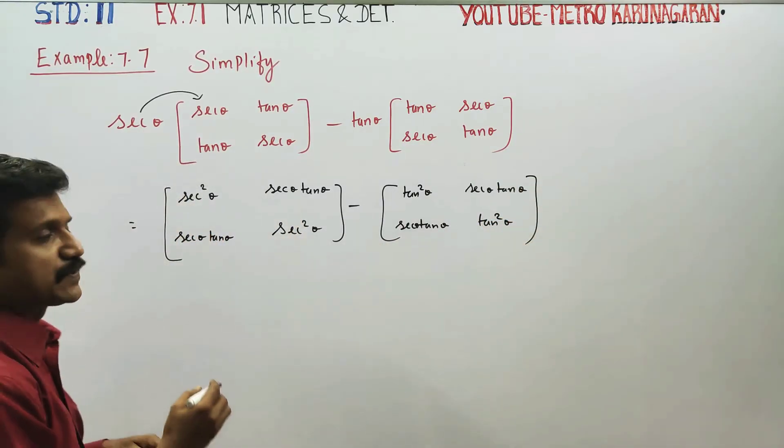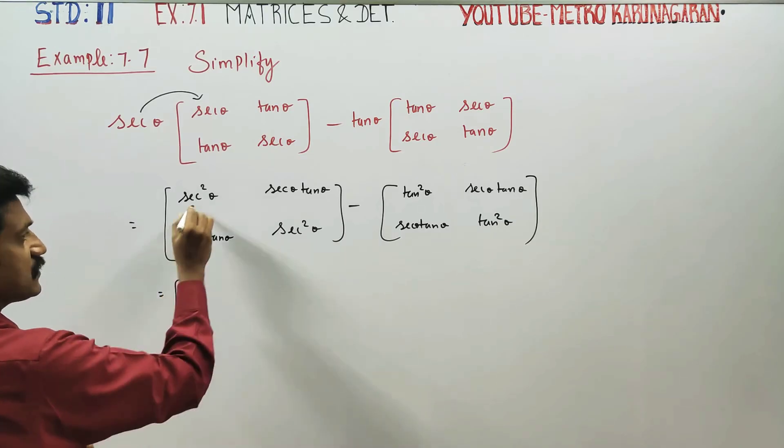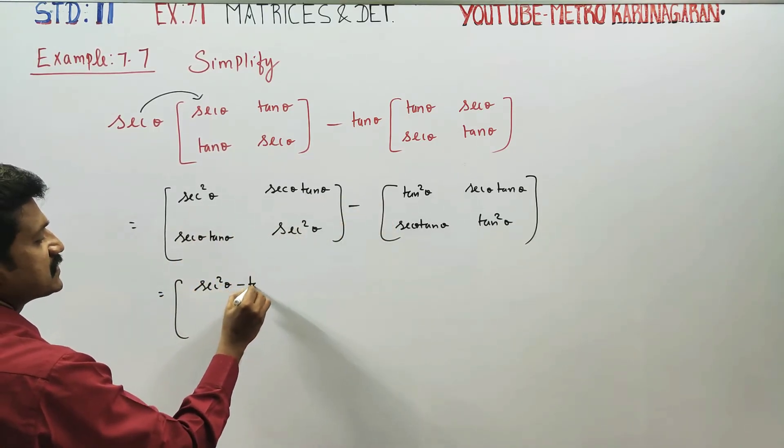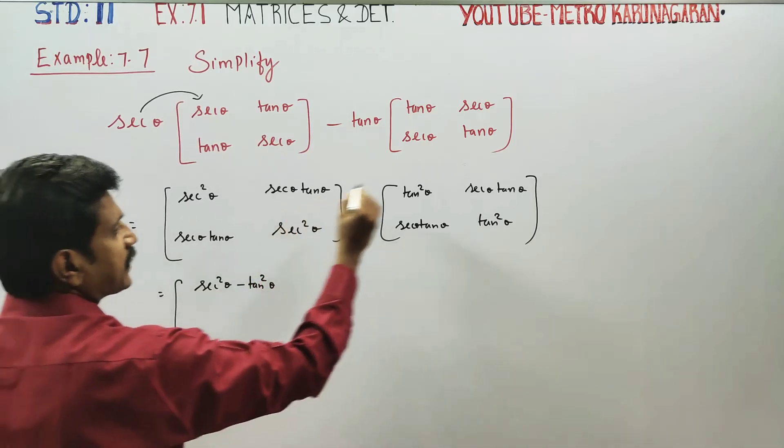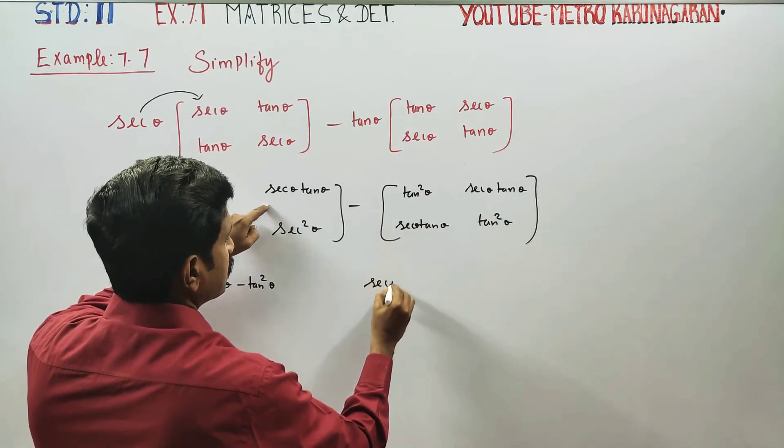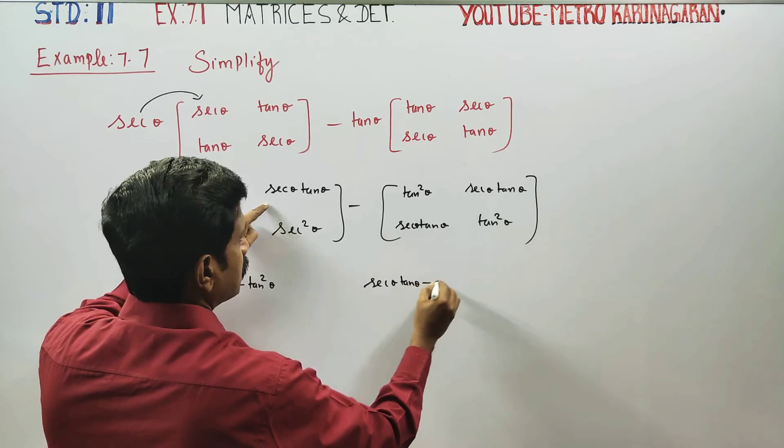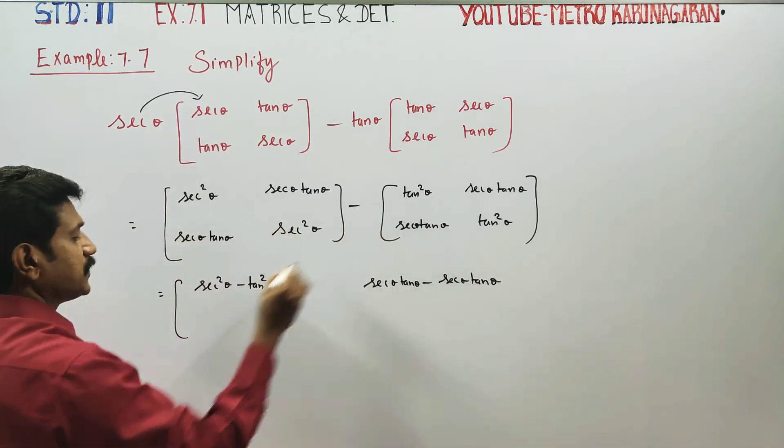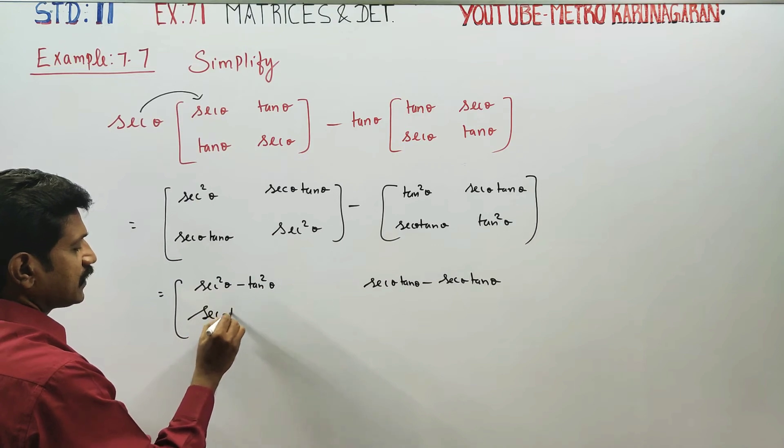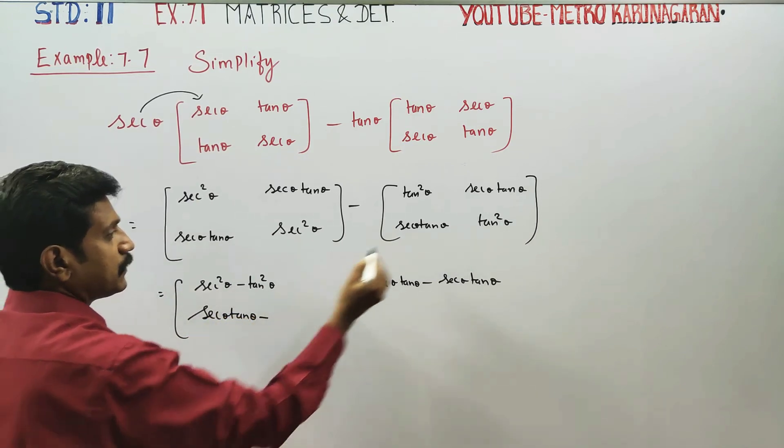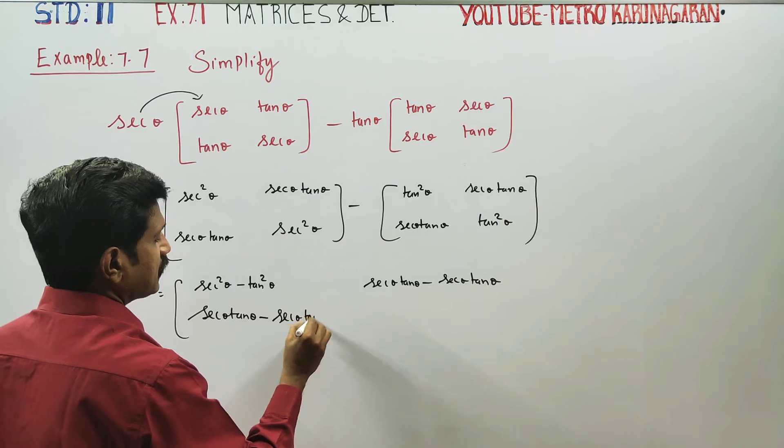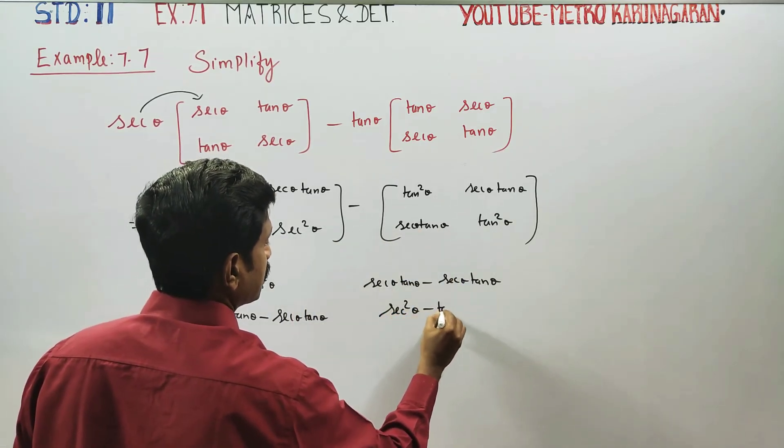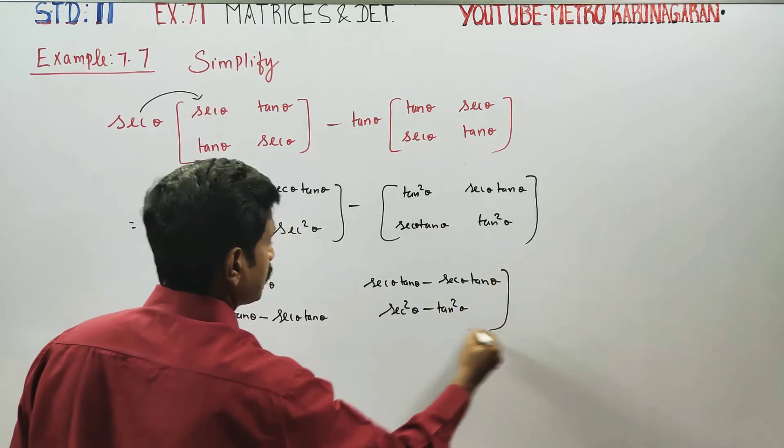This matrix minus, first element minus first element: secant squared theta minus tan squared theta. Second element minus second element: secant theta tan theta minus secant theta tan theta. Third minus third: secant theta tan theta. The last minus last: secant squared theta minus tan squared theta.